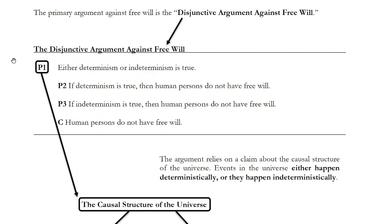I want to begin by looking at the structure of the argument and how it gets to its conclusion. I'm calling it the disjunctive argument against free will because in the first premise it presents us with a disjunction — a sort of either/or statement — and gives us two possibilities.